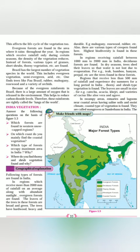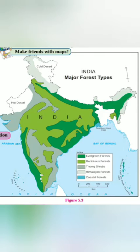The hardwood cannot decay very fast and it is heavy in weight. For example, mahogany, rosewood, rubber, etc. Also, there are various types of creepers found here. Creepers grow above and spread on top of the trees.